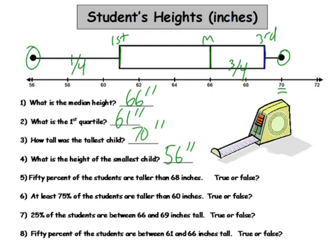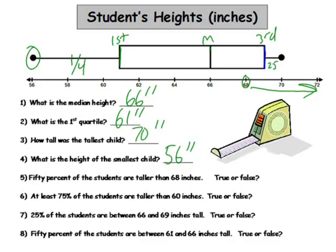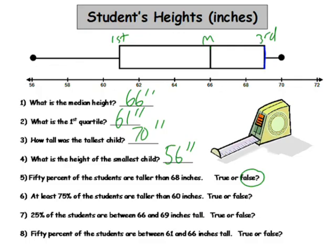50% of the students are taller than 68 inches — true or false? Let's find 68 inches. Here's 68 inches. Would you say 50% of the class is taller than 68? Well, you've got 25% here and 25% here, so only 25% can be taller than 68 inches. That's false. At least 75% of the students are taller than 60 inches — true or false? Each section is 25%, and three sections are above 60 inches — that's 75%. So at least 75% are taller than 60 inches. That's true.